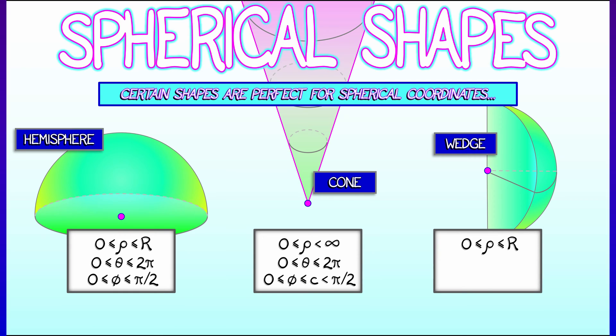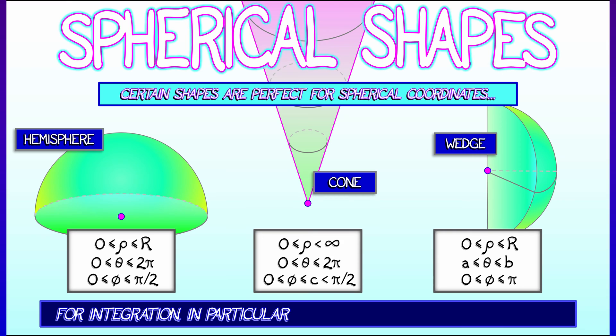And finally, for a wedge-like shape, you would have rho going from 0 to some capital R, and then theta in between two numbers, a and b, and phi sweeping all the way from 0 to π.